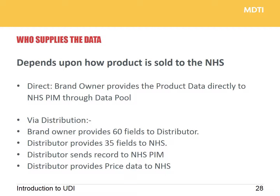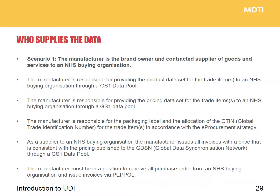In addition to the data fields for the NHS, it also depends how the product is supplied. If you sell directly as a manufacturer and brand owner, you're responsible for all of the data. If you are the brand owner and manufacturer supplying directly as the contractor for the goods, then you're responsible for the data, the labeling, submission of data to the data pool, providing pricing information, and also being in a position to receive purchase orders from NHS buying organizations and issue invoices via the PEPOL system.